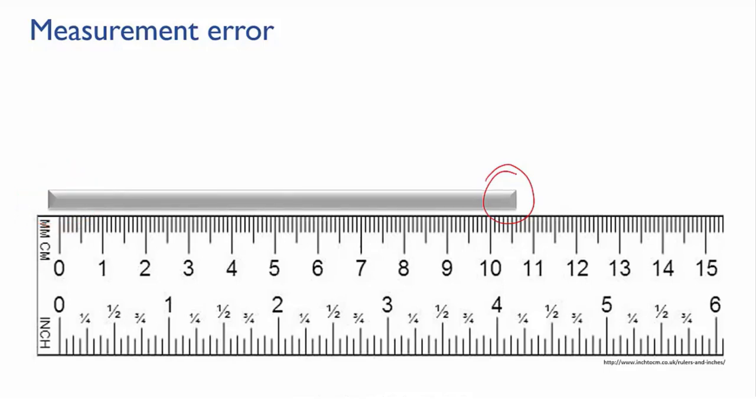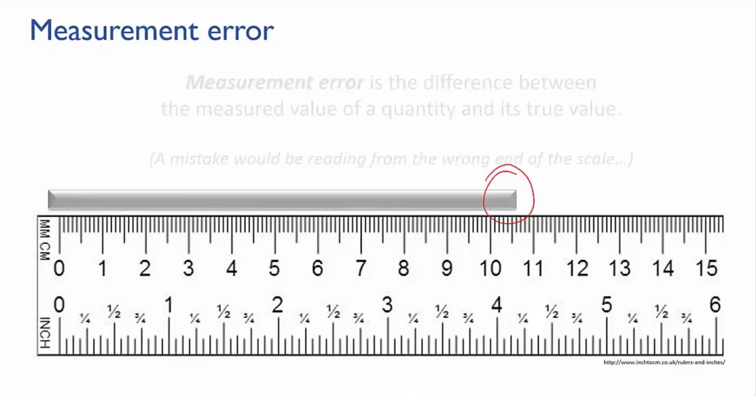So one of the most important skills for a good scientist is to understand how much error is involved when she takes a measurement. By error, I don't mean a mistake like that you had the ruler back to front and read from the wrong end, although that mistake would certainly lead to a large error in your measurement. The proper definition of measurement error is the difference between the measured value of a quantity and its true or standard value.